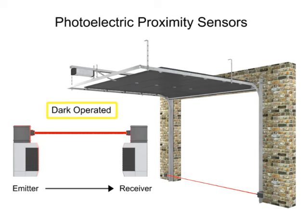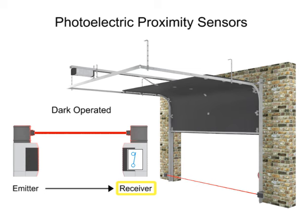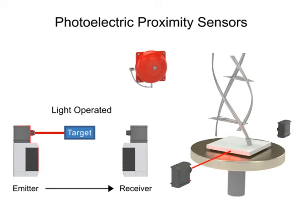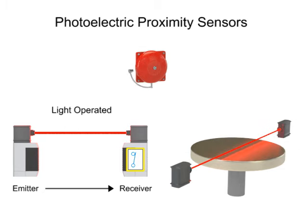In this dark-operated mode example, the beam of light is being received by the garage door receiver. When a target enters the beam of light, it activates the switch which will stop the garage door from closing. Conversely, in this light-operated mode example, the absence of light being received by the receiver is normal. When the object is removed from the table, the switch is triggered and the alarm will sound.